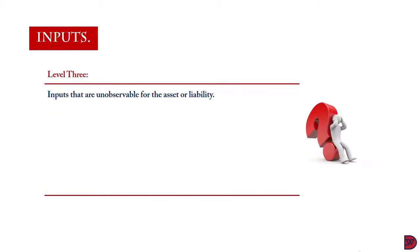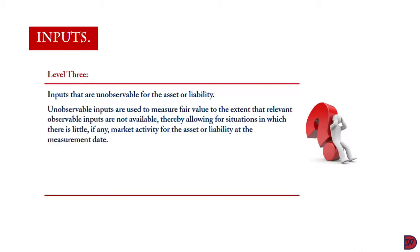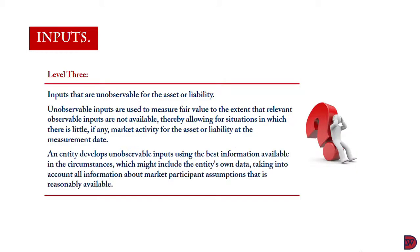Level three, the last level: inputs are unobservable. These inputs should be used only when it is not possible to use level one or level two inputs. Unobservable inputs are used to measure fair value to the extent that relevant observable inputs are not available, thereby allowing for situations in which there is little, if any, market activity for the asset or liability at the measurement date. An entity develops unobservable inputs using the best information available in the circumstances, which might include the entity's own data, taking into account all information about market participant assumptions that is reasonably available. The entity should maximize the use of relevant observable inputs and minimize the use of unobservable inputs.